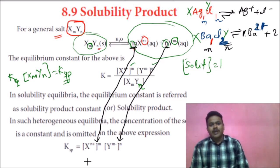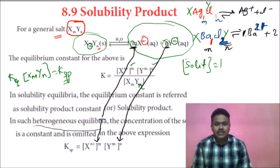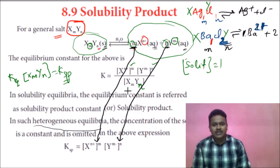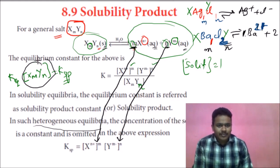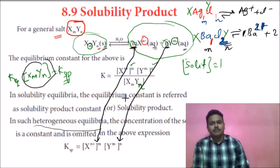We call this heterogeneous equilibrium because the reactant is a solid phase and the products are in aqueous phase — those are different phases. Since the concentration of the solid is constant, we combine it with K and give the combined term the name Ksp.